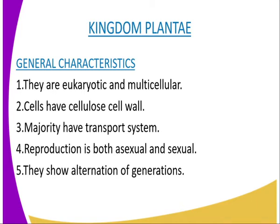They have photosynthetic pigments, hence they are autotrophic, and here we mean that they can make their own food, because they make their own food through the process of photosynthesis. Another characteristic of plants is that reproduction is both asexual and sexual. They show alternation of generations.